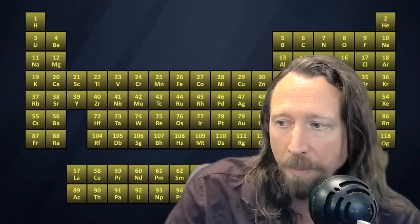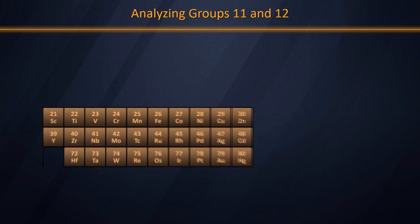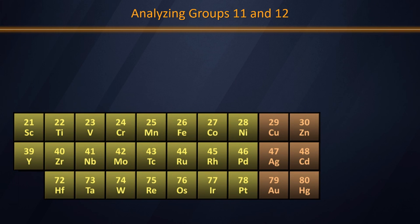To do that, I'm going to look at groups 11 and 12 individually. Let's do that starting off with group 11 of the periodic table containing copper, silver, and gold.